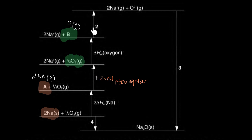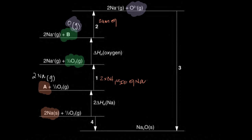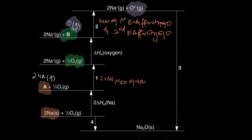Step two is O going to O²⁻, which isn't completely straightforward because you go from O to O⁻ first, then to O²⁻. O to O⁻ is the first electron affinity, and O⁻ to O²⁻ is the second electron affinity. Therefore, reaction number two is the sum of the first electron affinity of oxygen and the second electron affinity of oxygen.